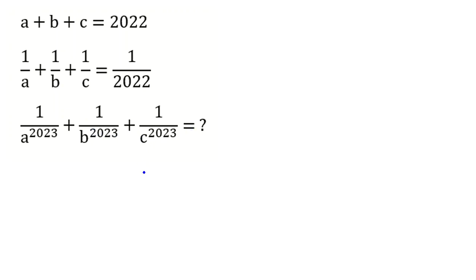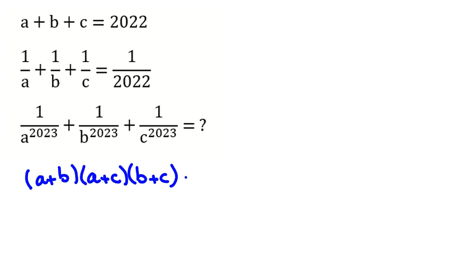Before solving the problem, I should tell you an important identity you need. It is: (A plus B) times (A plus C) times (B plus C). If we multiply these three things, we get A squared B plus A squared C.